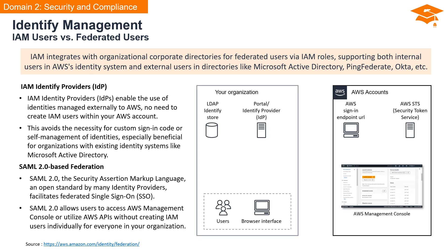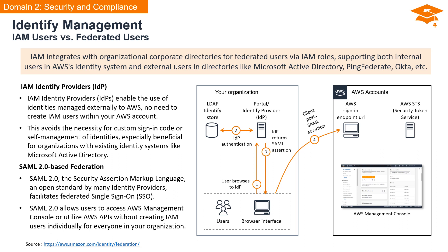One notable feature is SAML 2.0-based federation, leveraging the Security Assertion Markup Language. With SAML 2.0, users can access the AWS Management Console or utilize AWS APIs without creating IAM users individually. The process works as follows: the user browses to your organization's portal and selects the AWS Management Console option; the portal verifies the user's identity and generates a SAML authentication response; the client browser is redirected to the AWS single sign-on endpoint and posts the SAML assertion; the endpoint requests temporary security credentials and creates a console sign-in URL; AWS sends the sign-in URL back as a redirect; and finally the client browser is redirected to the AWS Management Console.